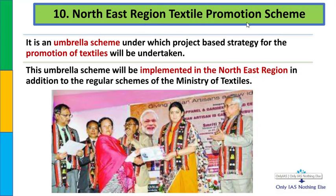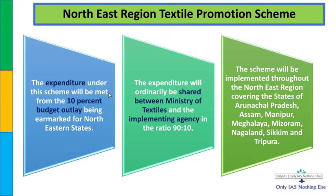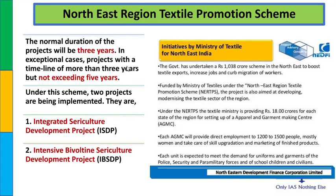दसवाँ और आखिरी scheme है - North East Region Textile Promotion Scheme (NERTPS). Ministry of Textile की regular schemes के अलावा यह addition में launch की गई है. इसमें हम North East region में textile को promote करते हैं. जितना भी budget में North East states के लिए year mark किया जाता है, उसका 10% हिस्सा NERTPS के अंदर दिया जाता है. 90:10 का ratio यहाँ Ministry of Textile और implementing agency के बीच का है, न कि central और state government के बीच - यह UPSC में ध्यान से पढ़ना है. इस scheme की duration 3 साल है, exceptional cases में 5 साल तक extend हो सकती है. सभी 8 sister states में यह scheme launch की जाएगी.